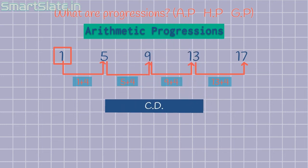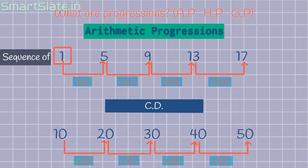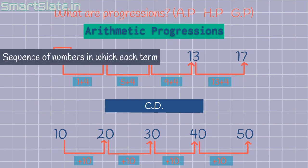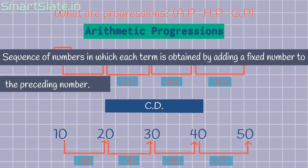Consider another example: 10, 20, 30, 40 and 50. Here, each term is obtained by adding 10 to the preceding term. This is also an arithmetic progression. Here, the common number or common denominator is 10. Arithmetic progression is stated as a sequence of numbers in which each term is obtained by adding a fixed number to the preceding number, except the first number. The first number is a random number.